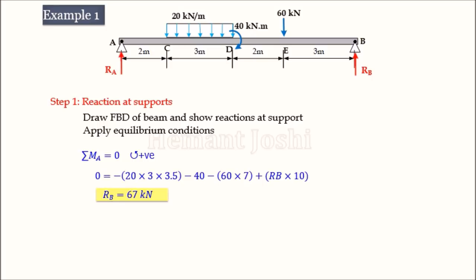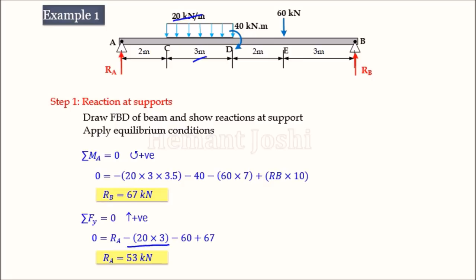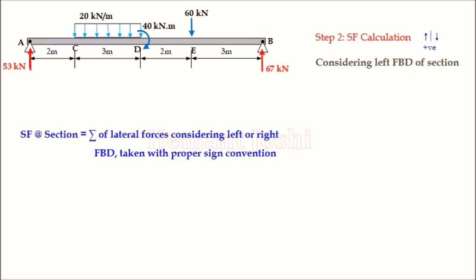Applying the second condition — summation of Fy equals zero — with upward positive: RA is positive (upward), the UDL total of 60 kN is downward (minus), the couple does not appear in the force equation, the 60 kN point load is downward (minus), and RB equals 67 kN upward. Solving gives RA = 53 kN. Step 2 is now the shear force calculation.